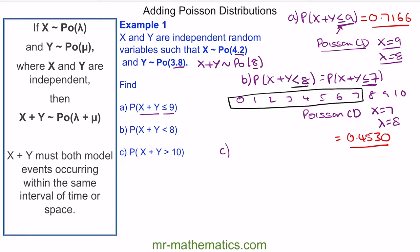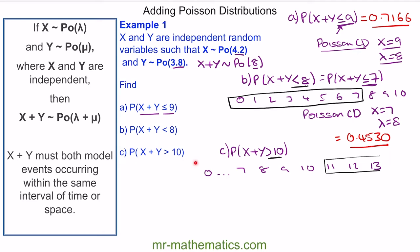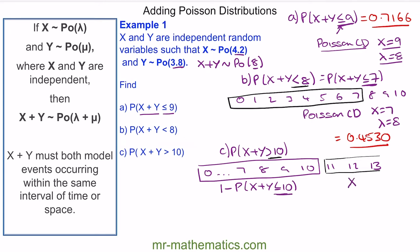For part C, the probability of x plus y being greater than 10. Listing outcomes up to 13, if we're looking at the observed value being greater than 10, we're looking at being greater than or equal to 11. This equals 1 minus the probability of x plus y being less than or equal to 10. We define x as equal to 10 and lambda equal to 8, giving us 1 minus 0.8159, which equals a probability of 0.1841.